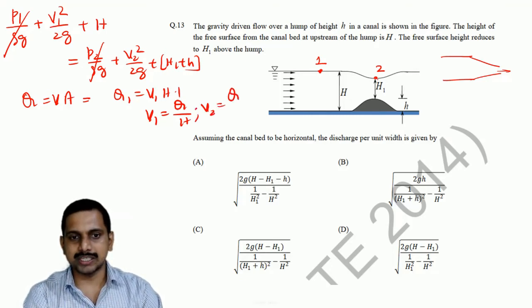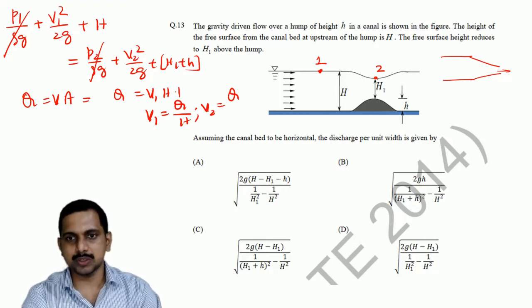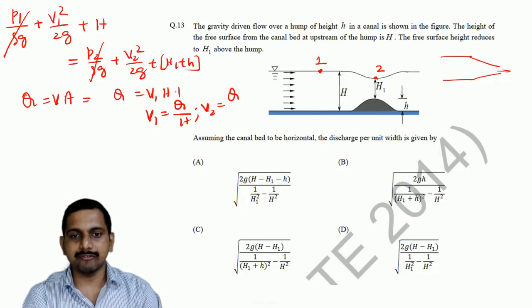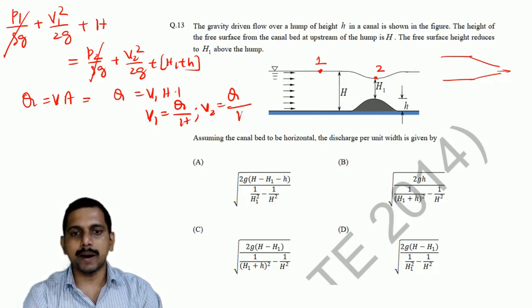Q is the same, it does not change. Q1, Q2 is not there, Q is the same. Discharge, what is coming here, is going here. So, V1 is equal to Q by h and V2 is equal to Q by h1.